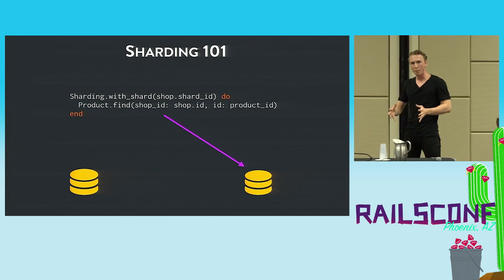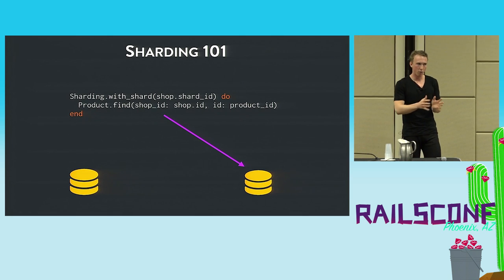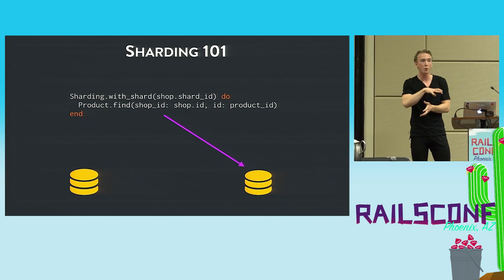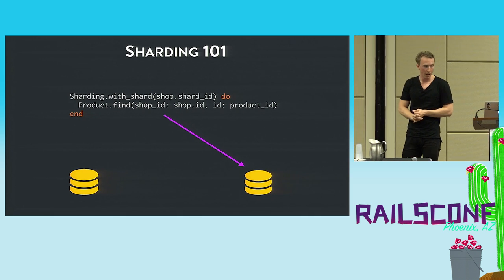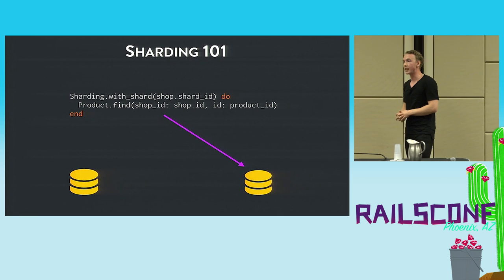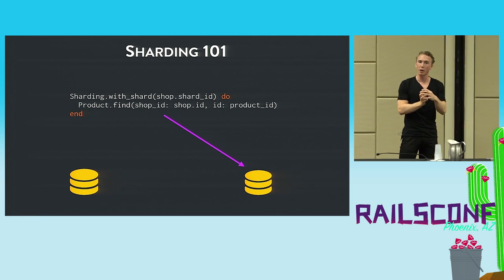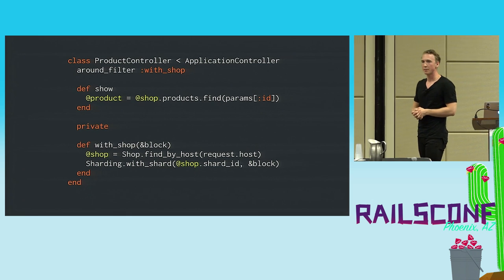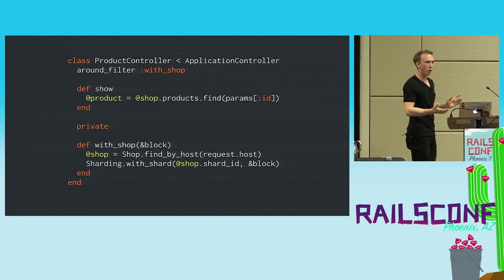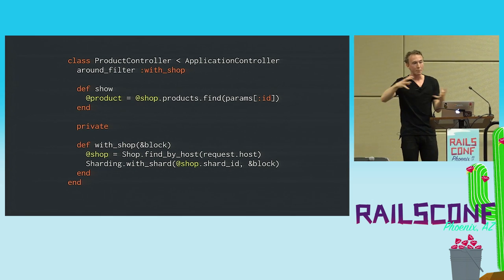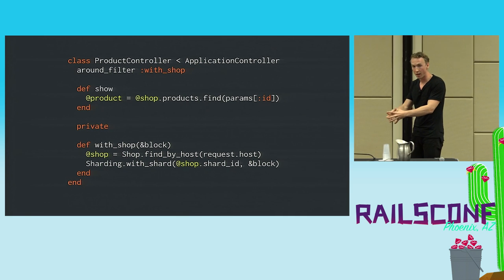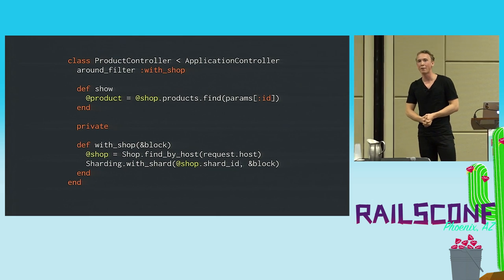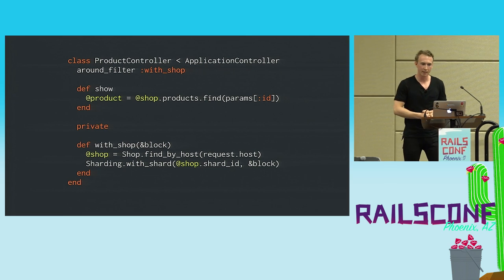We built a sharding API. A shop is fundamentally isolated from other shops — shop A should not have to care about shop B. So we did per-shop sharding where one shop's data is all on one shard and another shop might be on another shard. Basically, all the sharding API internally exposes is a block: within that block it selects the correct database for that shop's data. Within that block you can't reach the other shard — that's illegal. In a controller, most developers don't have to care about it; it's done by a filter that wraps the entire request in the connection for that shop.